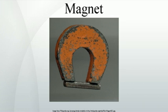Ancient people learned about magnetism from lodestones, naturally magnetized pieces of iron ore. They are naturally created magnets which attract pieces of iron. The word magnet in Greek meant 'stone from Magnesia,' a part of ancient Greece where lodestones were found. Lodestones suspended so they could turn were the first magnetic compasses.